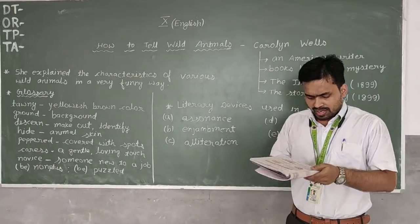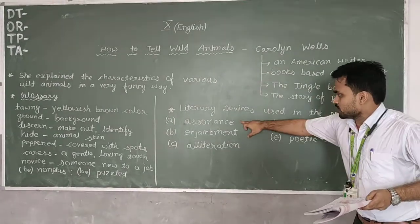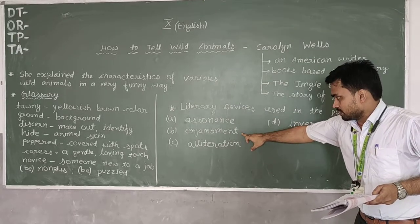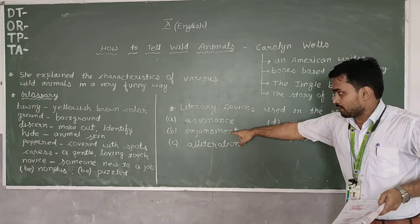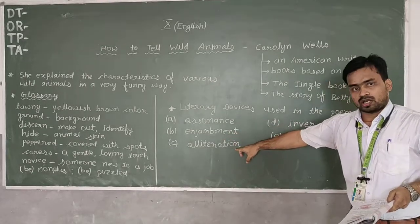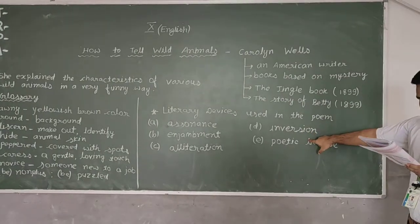Now moving into that, again see, here a poetic license I have mentioned. Assonance, I told, repetition of vowel sound. Enjambment, I told, whenever a line continues without obstruction, enjambment is used. Alliteration, I told, repetition of consonant sound. Now, inversion.